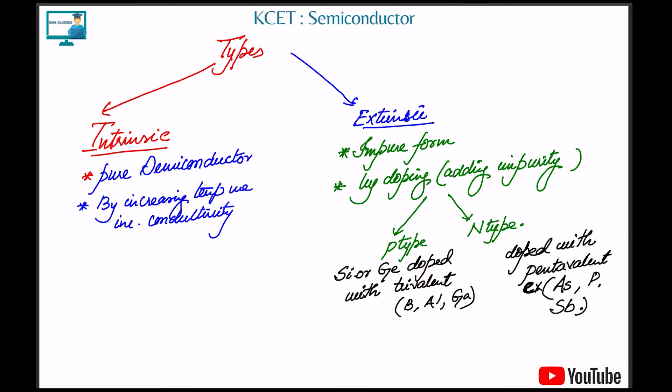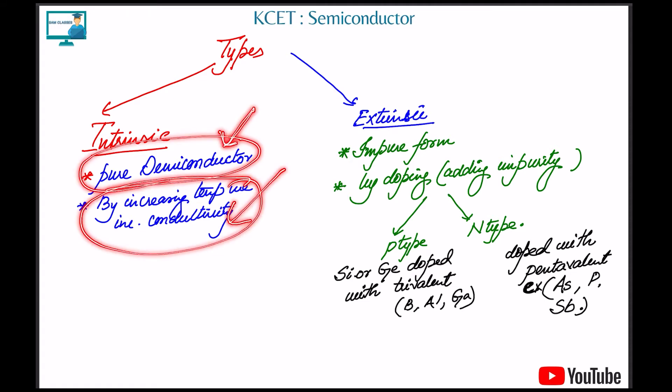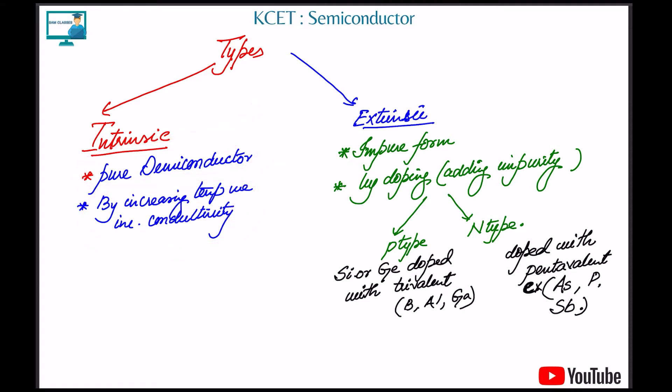Based on this, semiconductors are further classified into two types: intrinsic and extrinsic. Intrinsic means a pure semiconductor where we don't mix anything. By increasing temperature we increase the conductivity, because increased temperature increases kinetic energy so electrons can jump.